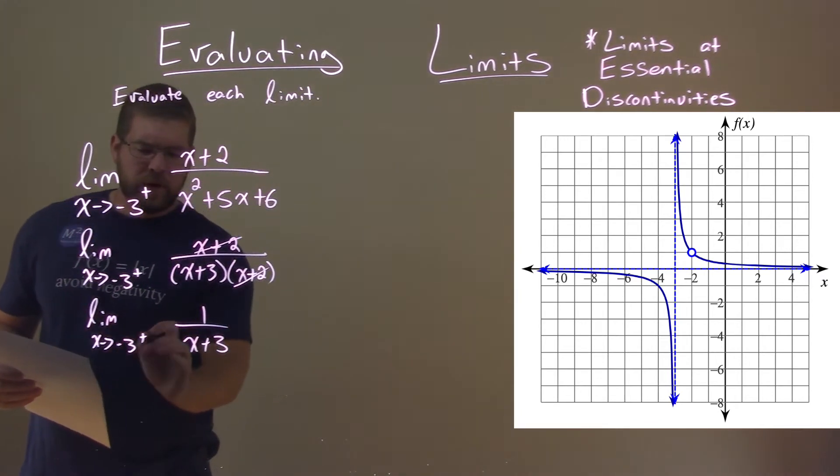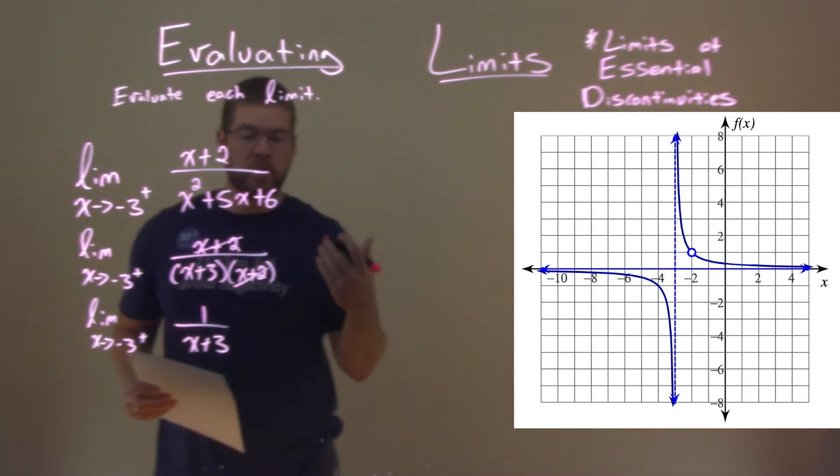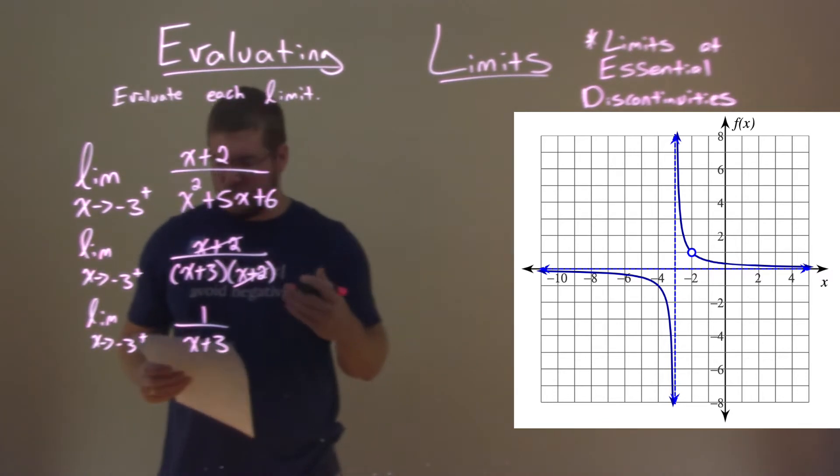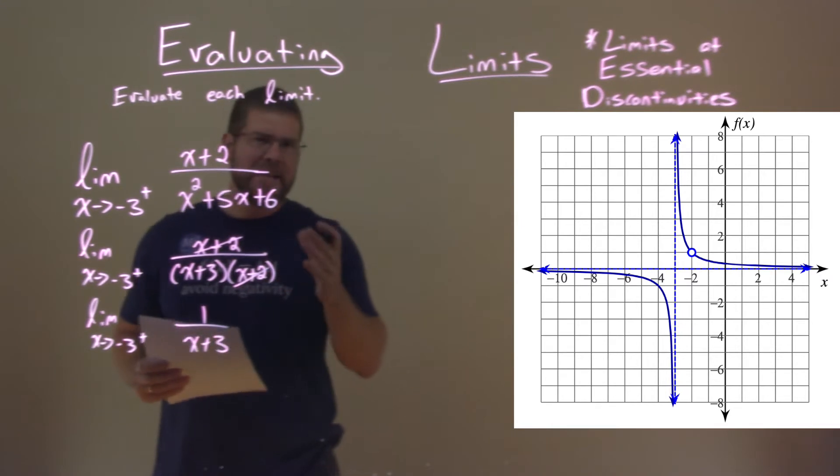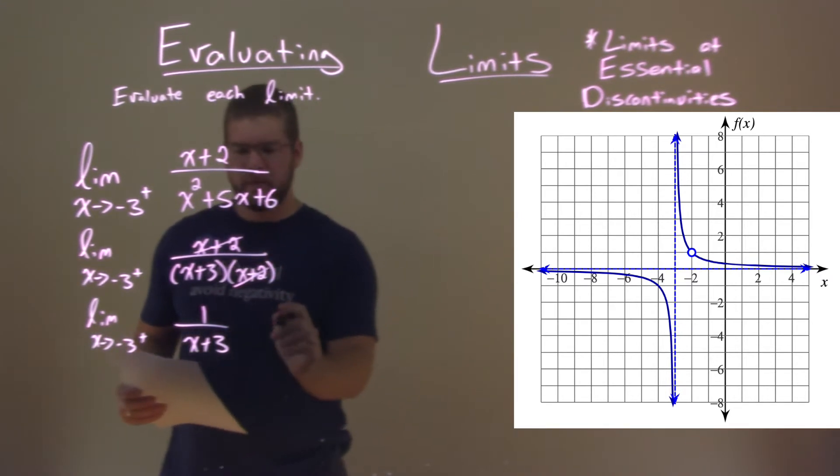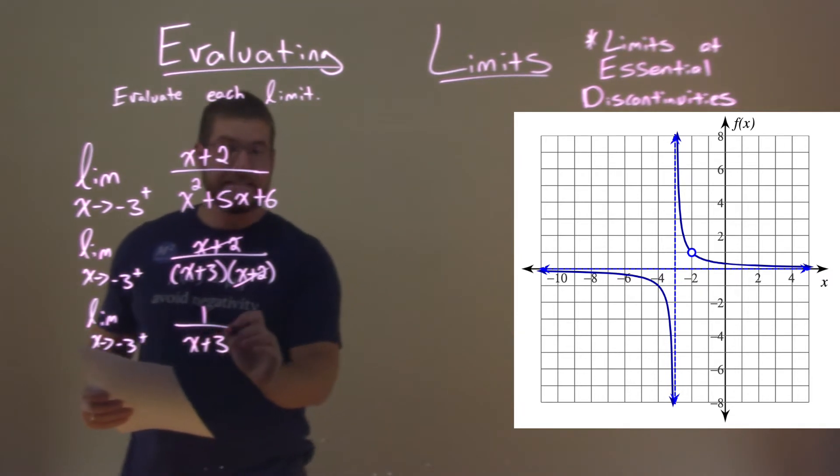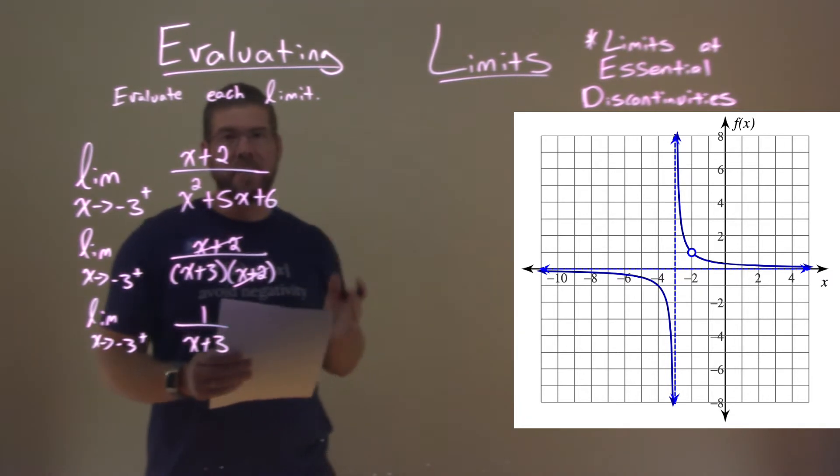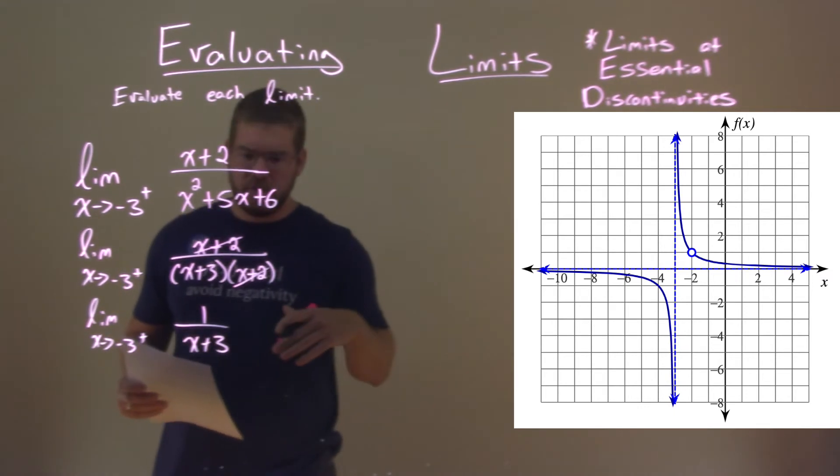Well, we look at negative 3, and we're approaching it from the right. So I like to pick a value just to the right of negative 3 and see if this denominator is positive or negative. We know the denominator is approaching 0, which 1 over 0 gives us that asymptote to positive infinity or negative infinity.